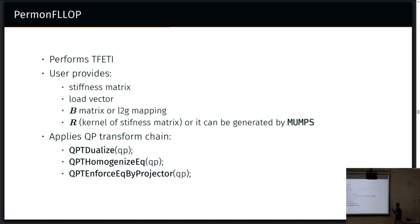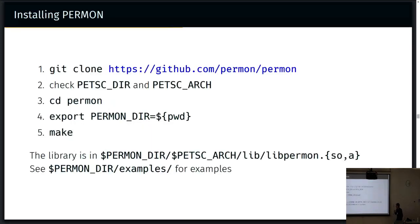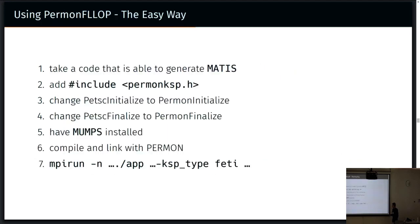In some cases it's very natural to describe a mathematical method using QP transformations. If you'd like to try it, it's pretty easy. If you have a working installation of PETSc, you just download it, set the PERMON directory to the root of the source code, and call make — that's it. We inherit all the options from PETSc. If you want to use Flop, the easiest way is, if you have code that generates MATIS, you just need to include the PERMON header, change PetscInitialize and PetscFinalize to PermonInitialize and PermonFinalize, then specify the KSP type as FETI, and you are using FETI for solution of your problem.